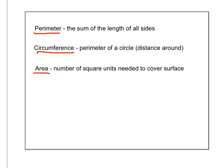And then area is considered the number of square units needed to cover the surface. So if I draw a little picture of a square for example, perimeter would be adding the four sides. So one side plus this side plus this side.